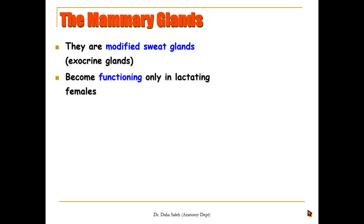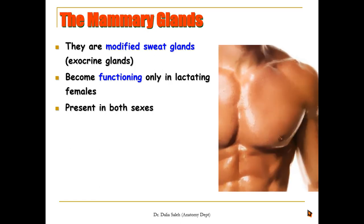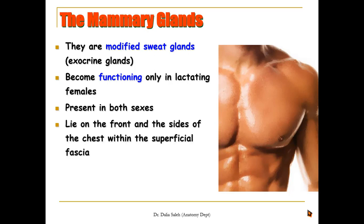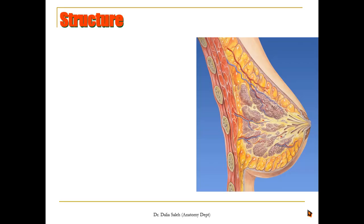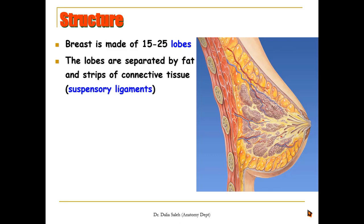The mammary glands are modified sweat glands. They only become functioning in lactating females, are present in both sexes but more developed in females, and they lie on the front and sides of the chest wall within the superficial fascia. The small elevations are called the nipples, surrounded by a colored circular area of skin called the areola. The mammary gland plus the surrounding superficial fascia and skin are called the breast. The breast is made of 15 to 25 lobes, separated by fat and stripes of connective tissue called the suspensory ligaments, which hold the shape of the breast. With age these ligaments become weak, causing sagging of the breasts.